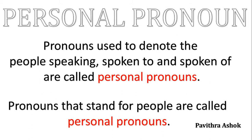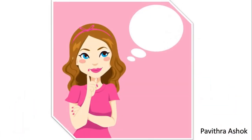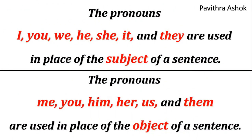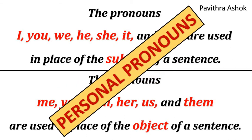Students, in the previous session we understood which pronouns are used in place of the subject and object of a sentence. The pronouns I, we, he, she, it, and they are used in place of the subject of a sentence. The pronouns me, you, him, her, us, and them are used in place of the object of a sentence. They are personal pronouns.